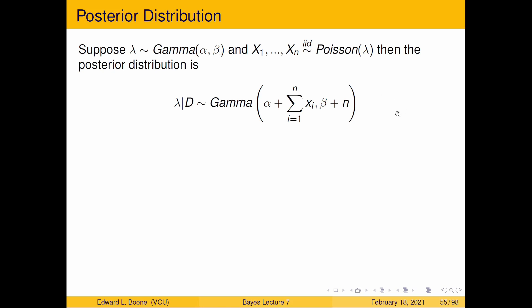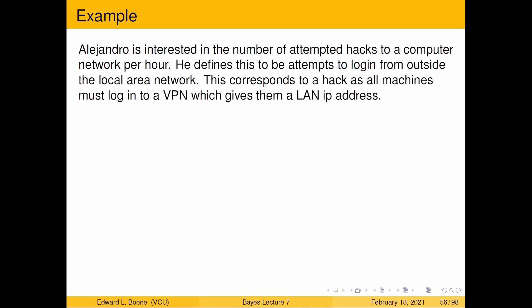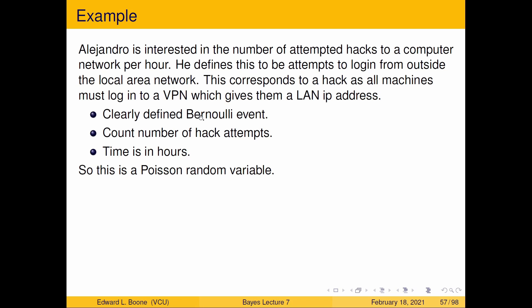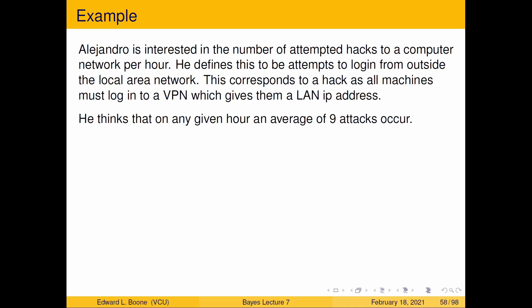Let's look at an example — everything is on one slide, so pause if you want to copy it down. Alohandro is interested in the number of attempted hacks to a computer network per hour. He defines this as login attempts from outside the local area network. Since outside machines must go through a VPN, the event is clearly defined. He is counting hack attempts per hour — definitely a Poisson random variable, provided samples are independent.